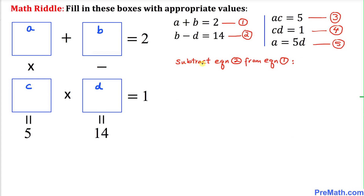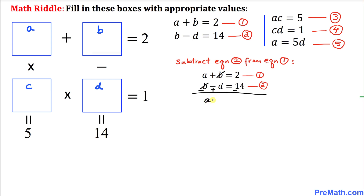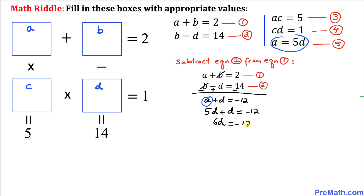Now we subtract Equation 2 from Equation 1. Changing the signs for subtraction, the B terms cancel, leaving A plus D equals negative 12. Substituting A equals 5D from Equation 5, we get 5D plus D equals negative 12, so 6D equals negative 12. Dividing both sides by 6 gives D equals negative 2.